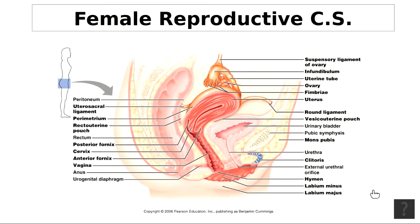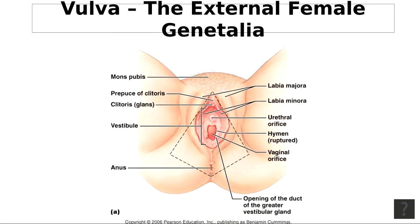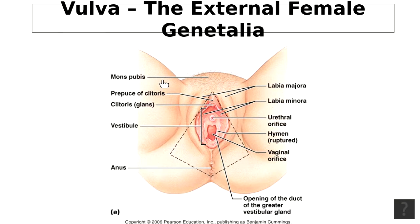The external female genitalia are called the vulva. The mons pubis — M-O-N-S P-U-B-I-S — is an elevation of adipose tissue which cushions the pubic symphysis during sexual intercourse.